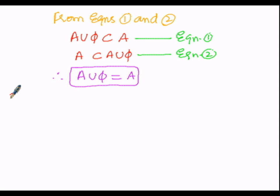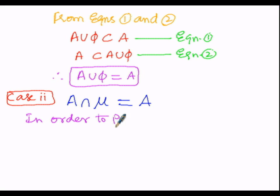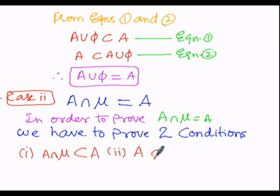Now let us go to case number 2, where we prove A intersection μ equals A. We will prove this based on two conditions: first, A intersection μ must be a subset of A, and second, A must be a subset of A intersection μ. If both hold, then A intersection μ equals A.